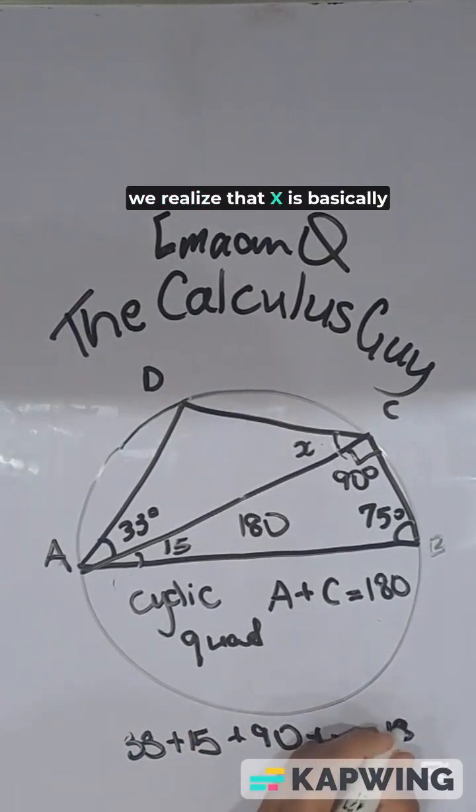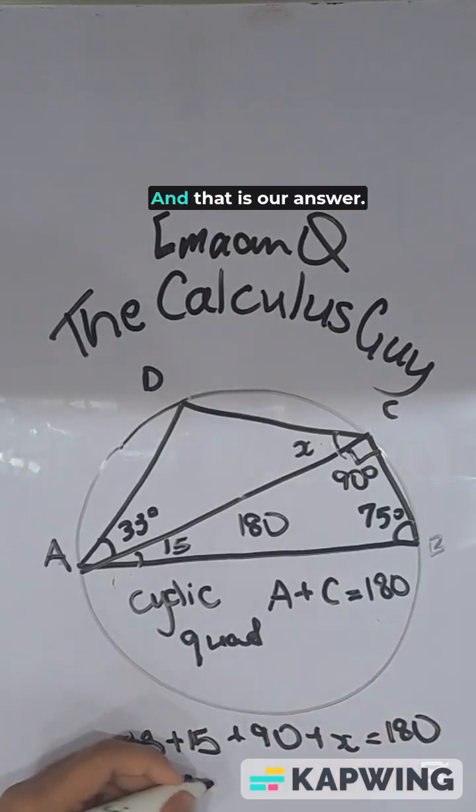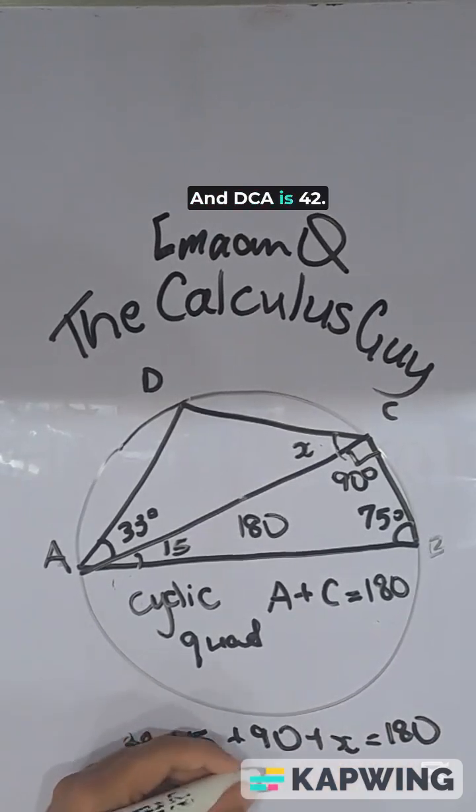And when we solve that, we realize that X is basically equal to 42. And that is our answer and DCA is 42.